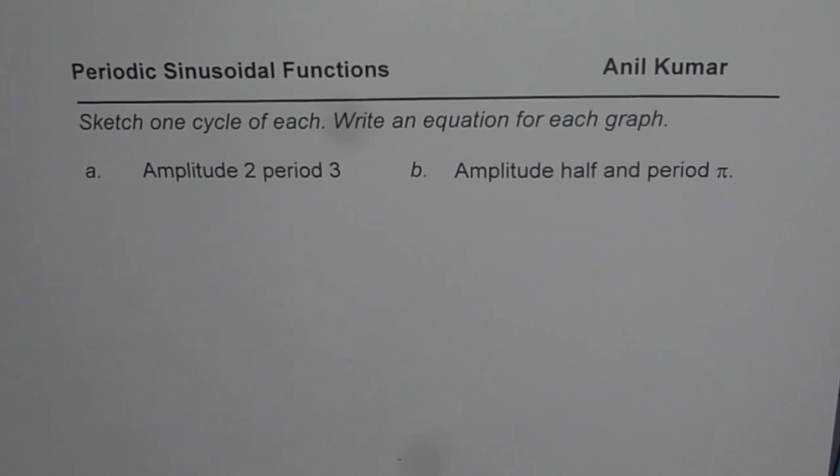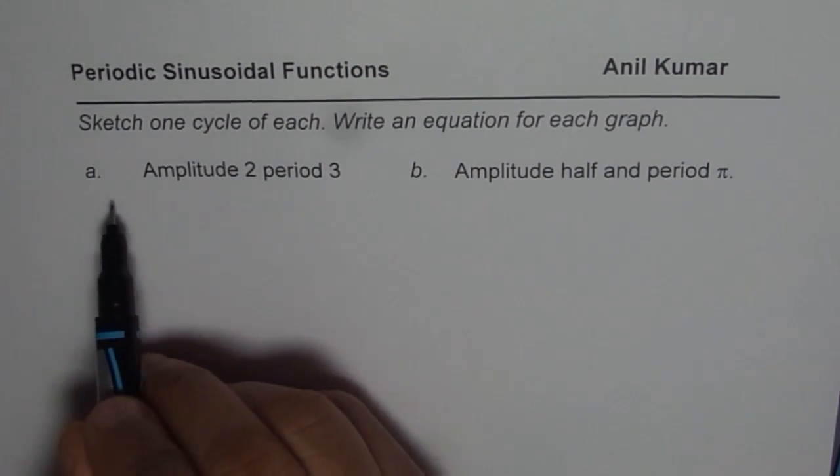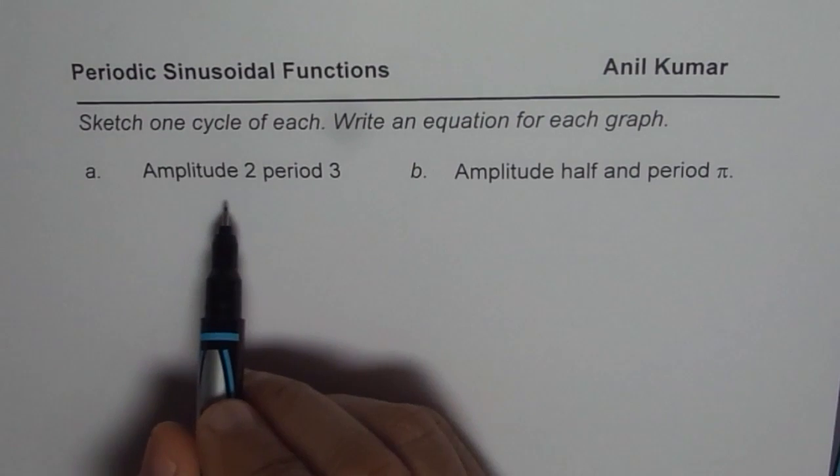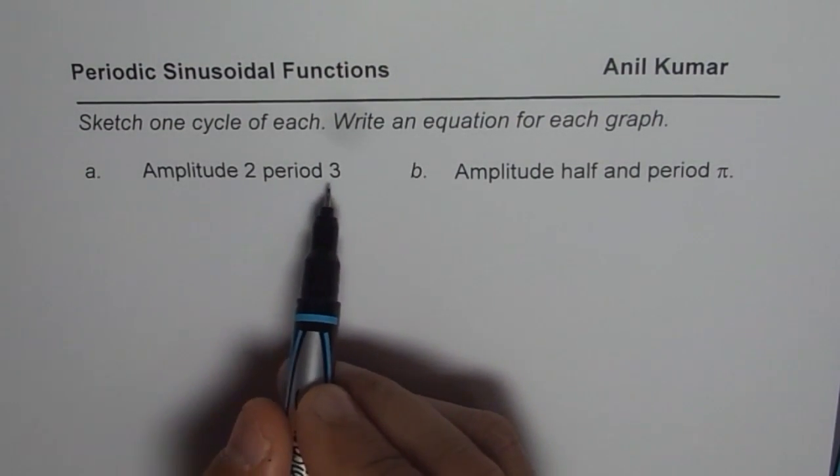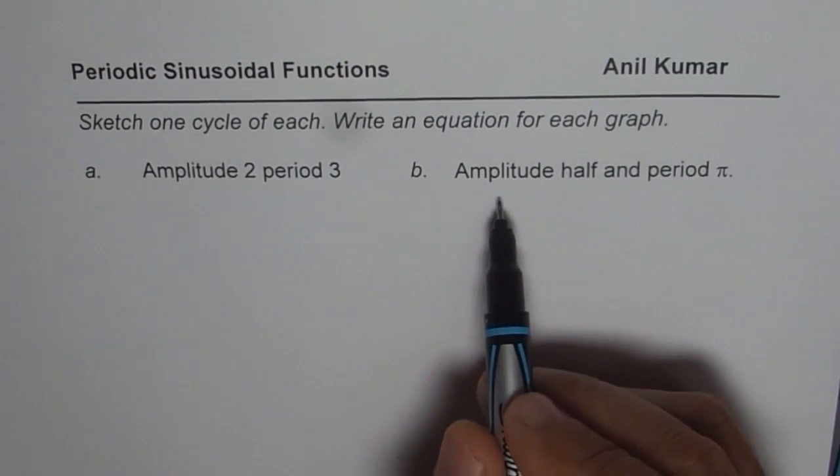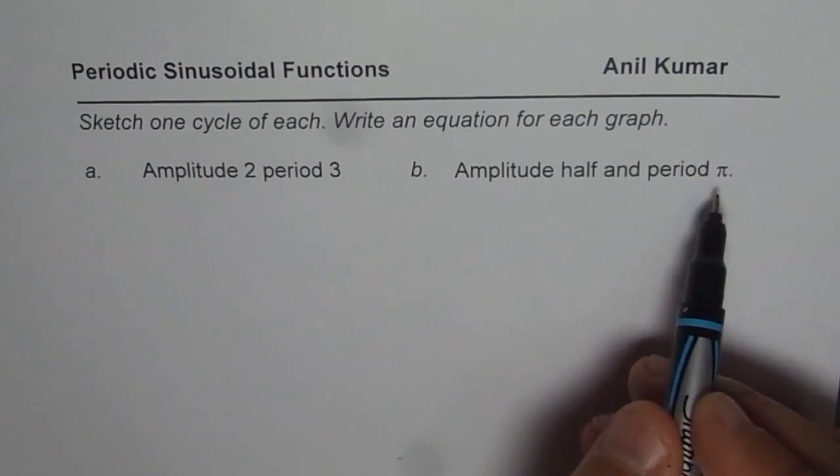I'm Anil Kumar and here is a test review question for you on periodic sinusoidal functions. The question is, sketch one cycle of each, write an equation for each graph. So we are given two parts. The first equation and graph is amplitude of 2 and period of 3. The second one is amplitude is half and period is pi.